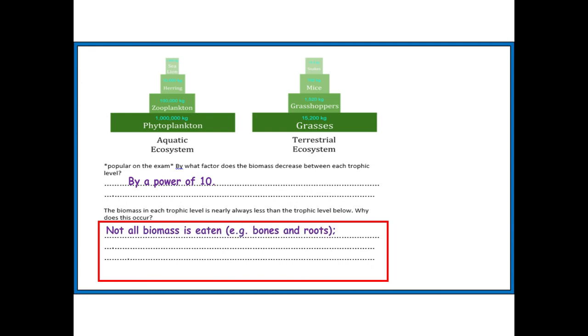A couple of points here to note from the mark scheme. Not all biomass is eaten. For example, we can't eat bones and animals don't usually eat the roots of plants. Some is transferred to the environment as heat, so obviously that's lost. Some is excreted as urine and feces. So again, lost to the environment. And then some biomass is indigestible, for example, cellulose.